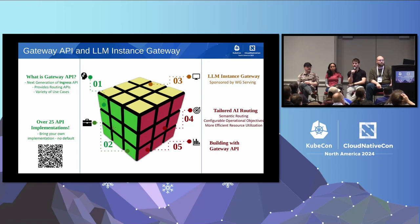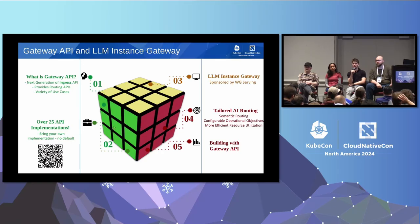I first wanted to start with what Gateway API is, very briefly. Gateway API is positioned as the next generation of Ingress API — it brings a lot of the Ingress functionality and provides a more portable way for doing routing and various other features. It currently provides a lot of routing APIs, mostly L7, but we're looking for feedback to understand if L4 routing is something that's needed and could be incorporated.